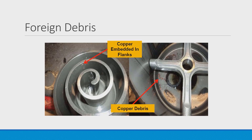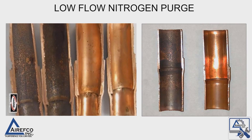As shown in this slide, foreign debris such as copper circulates throughout the system, gets embedded into the compressor components, and as it builds up over time will lead to compressor inefficiency and ultimately failure. We have shown in previous videos the importance of low-flow nitrogen purge throughout the system while brazing on copper lines to reduce the amount of oxidation.